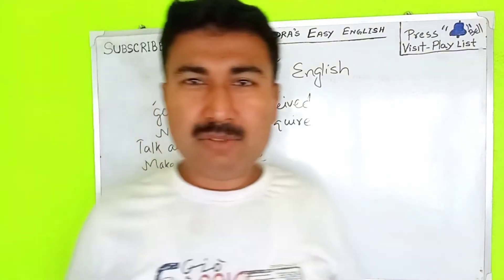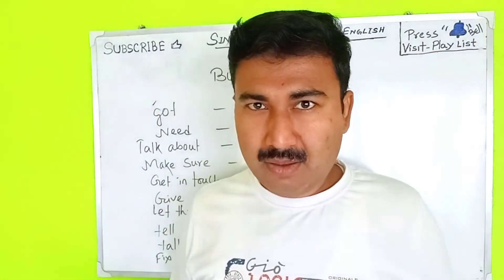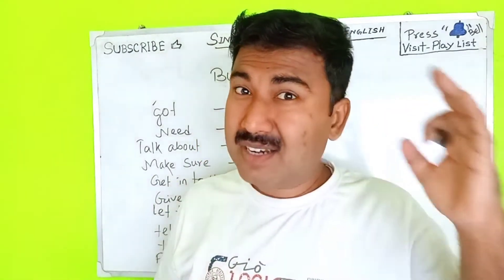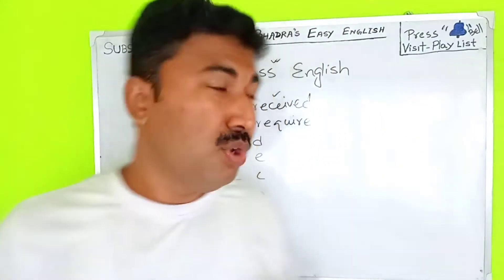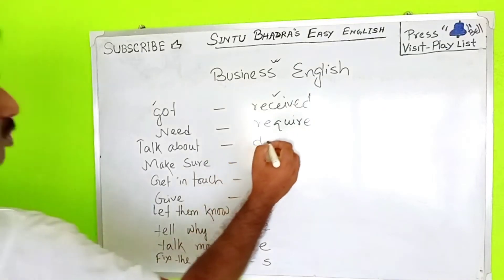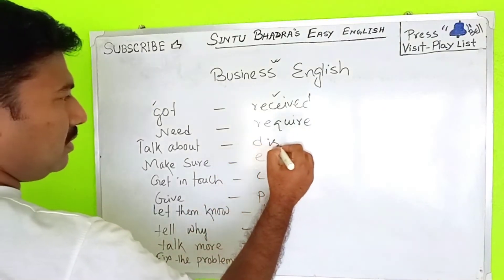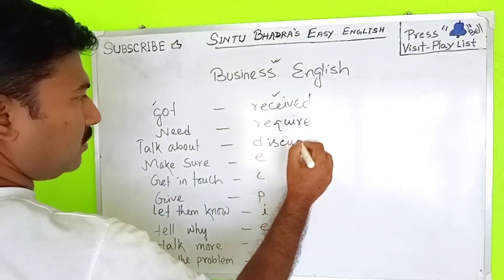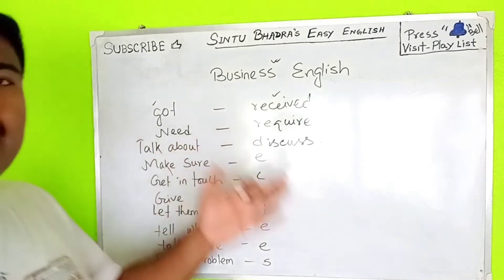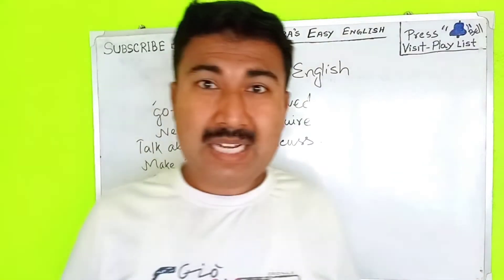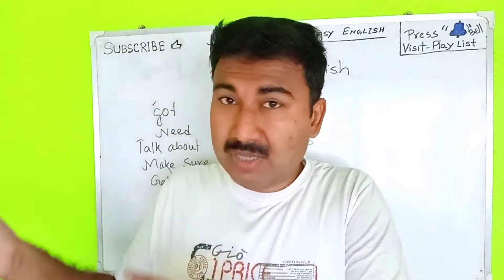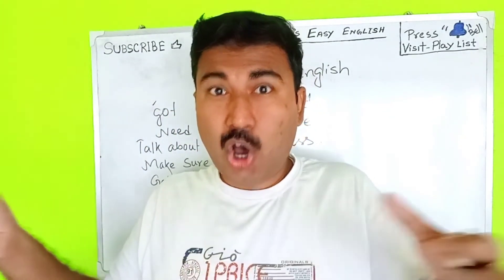In normal English you say: 'Let's talk about the business.' In business English, you want to say 'discuss.' So 'talk about' means 'discuss.' For example: 'Let's have a discussion over the matter' or 'Let's discuss the order.' So 'discuss' is the business English equivalent.